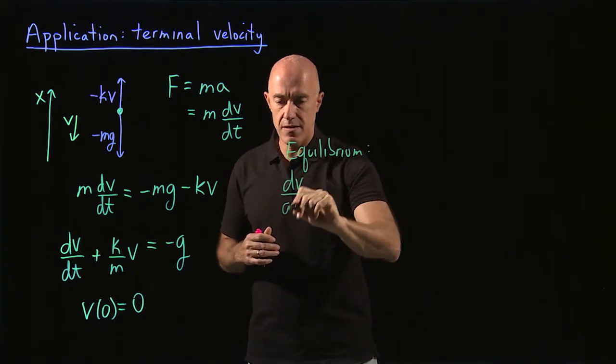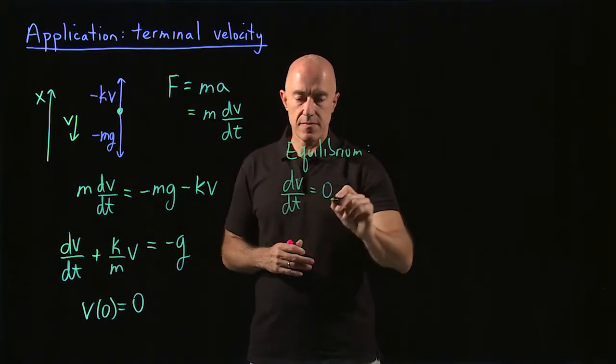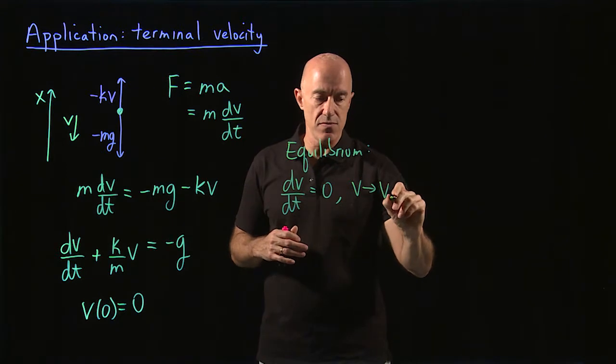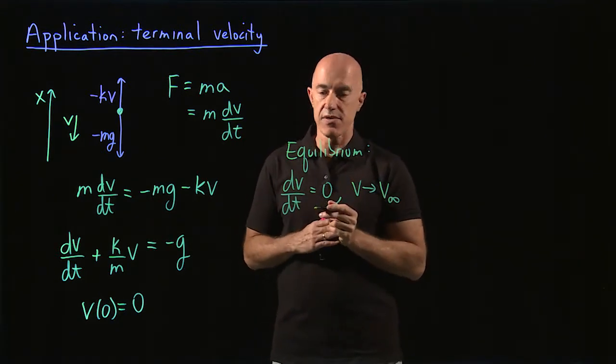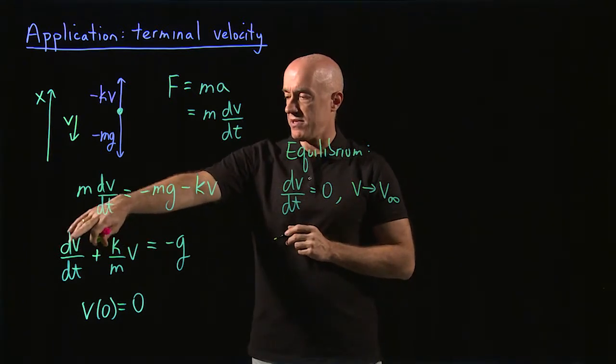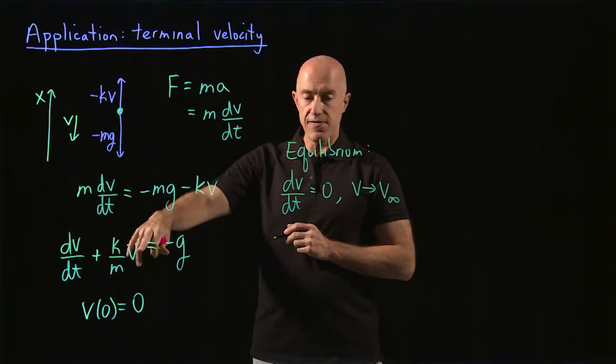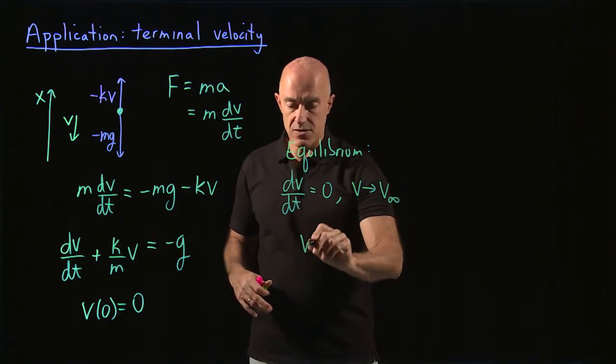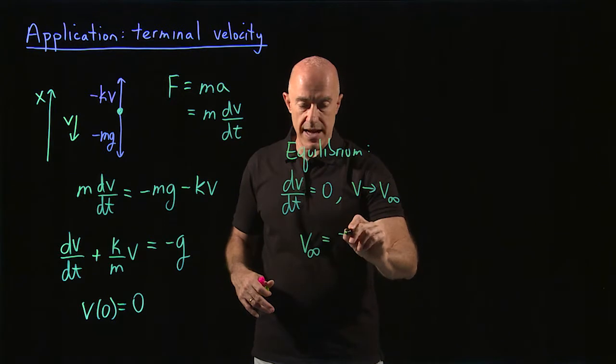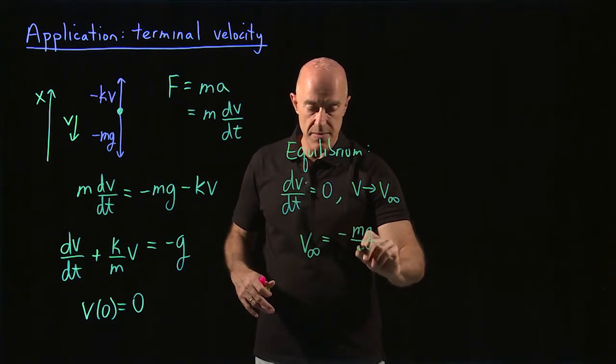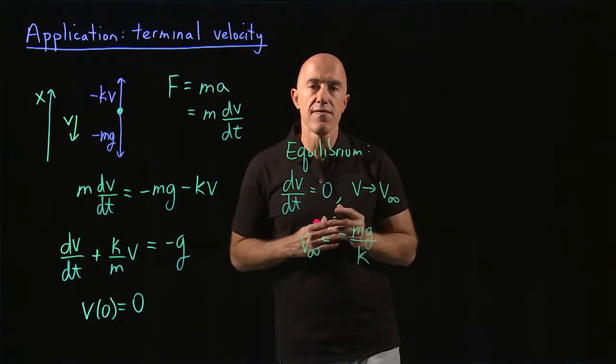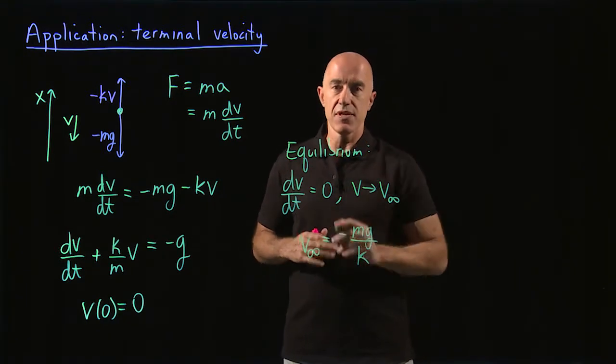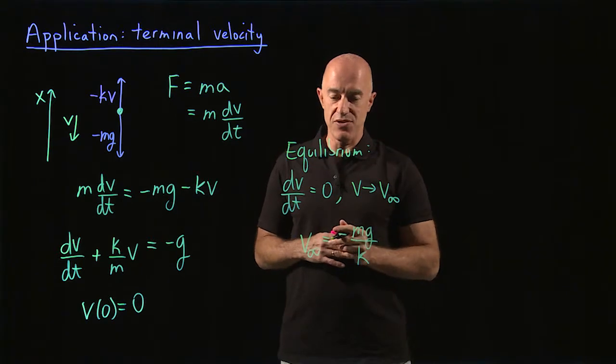This dv dt equals zero. And then v will go to what's called the terminal velocity. So that will be v infinity. That's the terminal velocity of this skydiver. You just simply put dv dt equal to zero, solve for v, and that will give us v infinity. So v infinity will be minus mg over k. So the terminal velocity is equal to minus mg divided by k. That will be the final velocity of the skydiver before he pulls his parachute. Hopefully, he'll eventually pull his parachute.